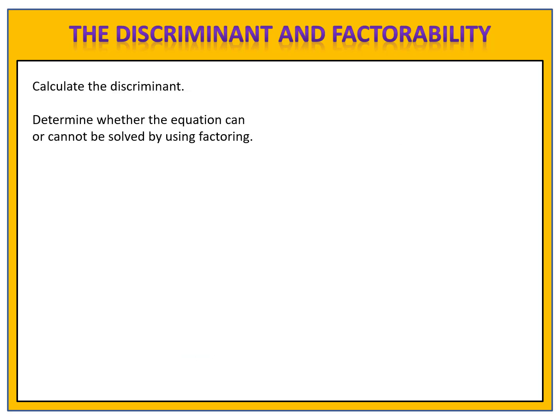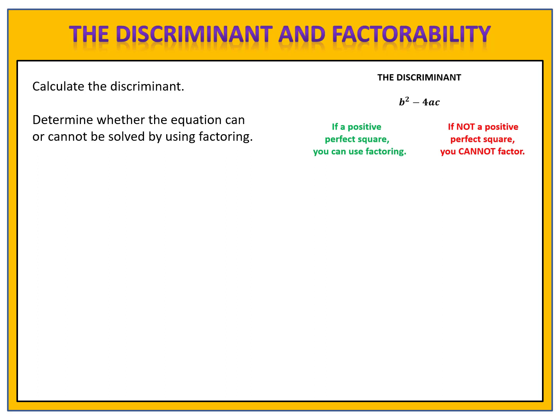Let's see how this works in an example. For the first example, we want to calculate the discriminant and then determine whether the equation can be solved by using factoring. We'll use the formula b squared minus 4ac in order to do this. Here's our first equation: 3x squared plus 5x minus 1 equals zero. The first thing I check is to make sure that the equation is written in standard form and that it is equal to zero. It is.